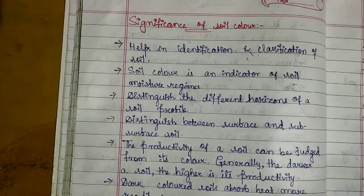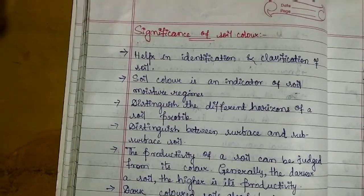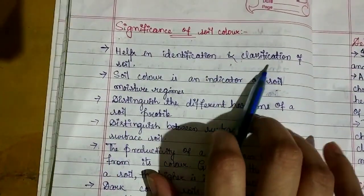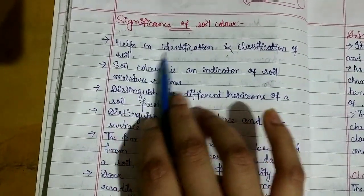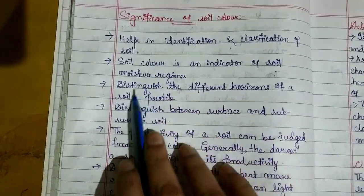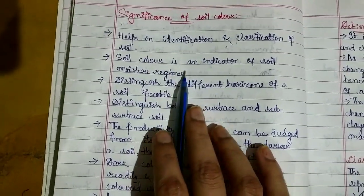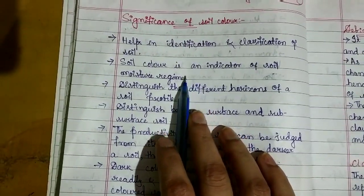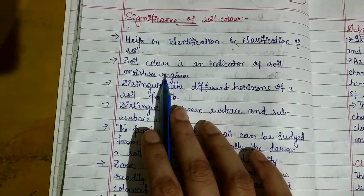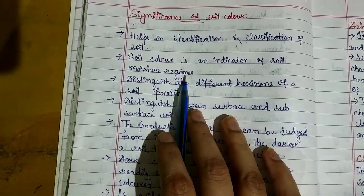What is the significance of soil color? First, it helps us in classifying the soil into red soil, black soil, yellow soil, and different types. Second, soil color is an indicator of soil moisture regime - how much water is in the soil. If there is more water or less water, we can see from soil color as well.